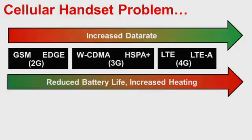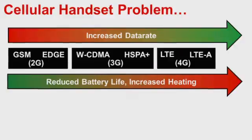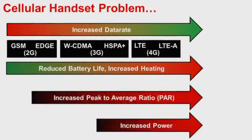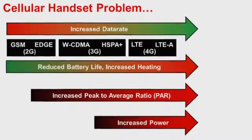The reduction PA efficiency responsible for this heating and battery life problem is due to peak to average ratio and output power. The peak to average ratio comes along with the higher data rates and the output power comes along with the fact that LTE uses many bands and incurs a lot of front end losses in typical cell phones.